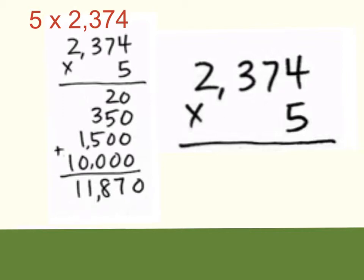Now let's solve this problem using the standard algorithm. We have 5 ones times 4 ones, which gives me a product of 20. Put your 0 in your ones place and carry your 2 above your tens place. Next we move to our tens place — 5 times 7 tens equals 35, plus 2 would be 37. Put your 7 in your tens place and carry your 3 to your hundreds place.